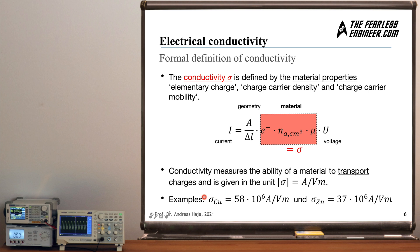Let's look at two examples. The conductivity of copper is 58 times 10 to the 6 amps per volt meter. And zinc is only 37 times 10 to the 6 amps per volt meter. So from these two numbers, you can see that copper is a much better conductor than zinc, for example.